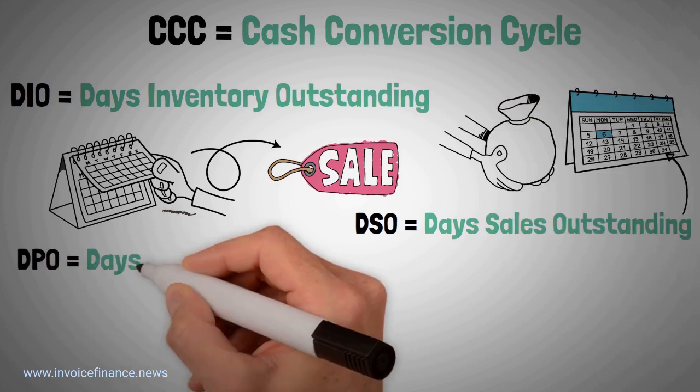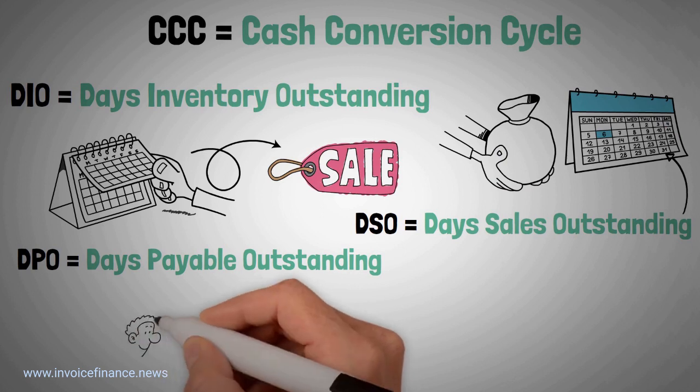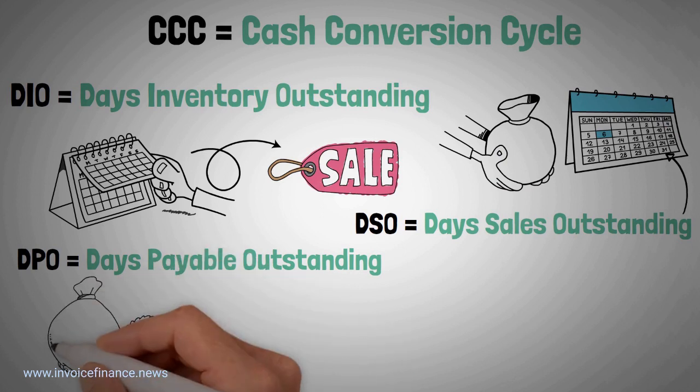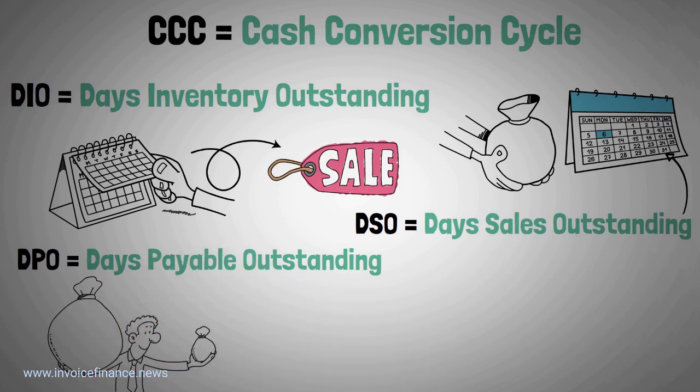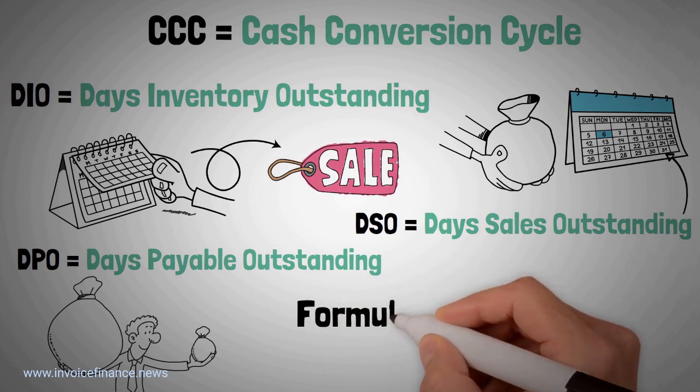DPO equals days payable outstanding. It measures, on average, how many days a company is taking to pay its suppliers. The formula is as follows.